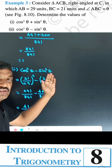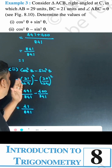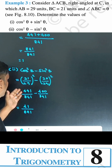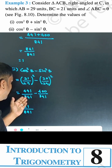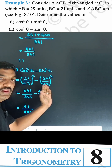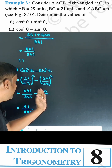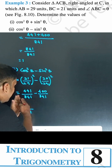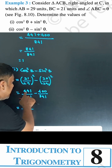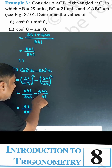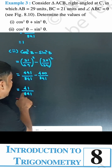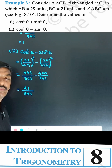Next, cos²B minus sin²B. Cos²B is 441/841. The denominator is 841, and the numerator is 441 minus 400, which is 41. So the answer is 41 divided by 841.